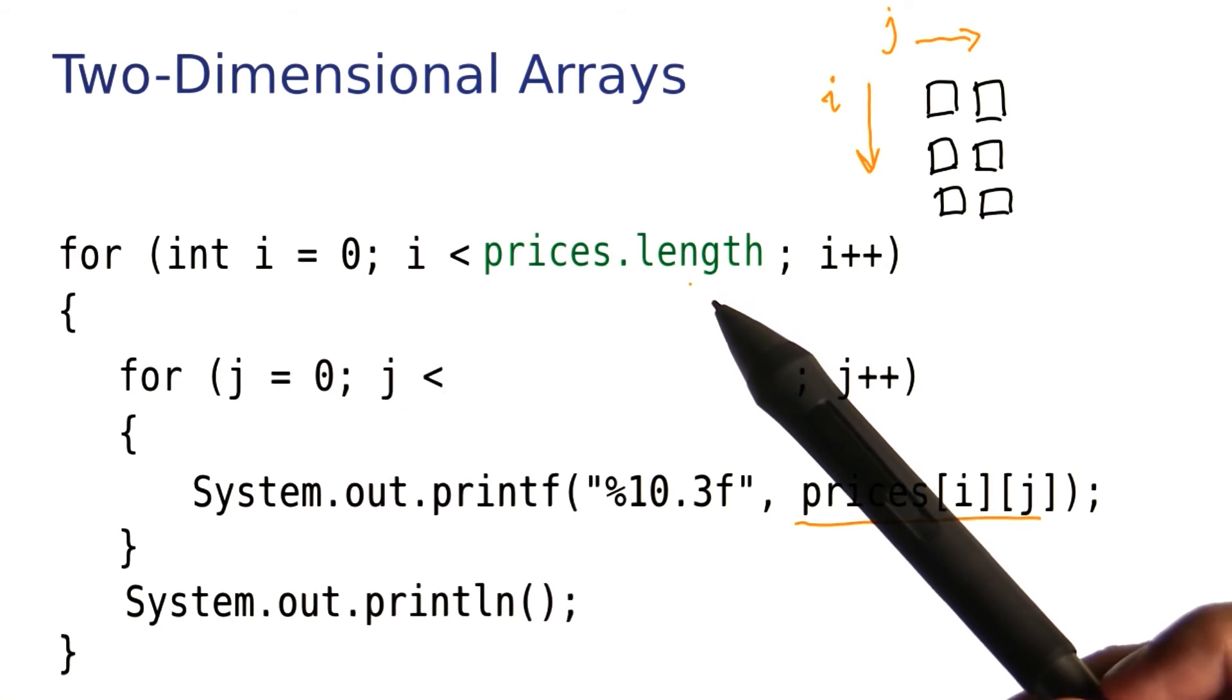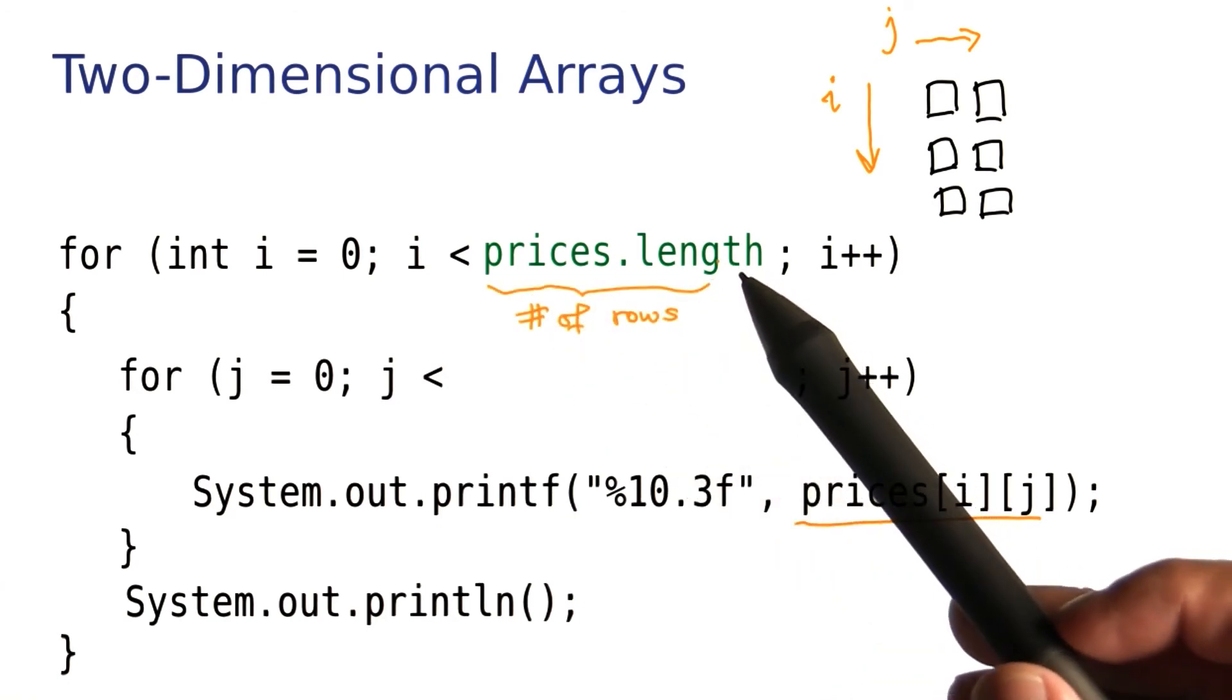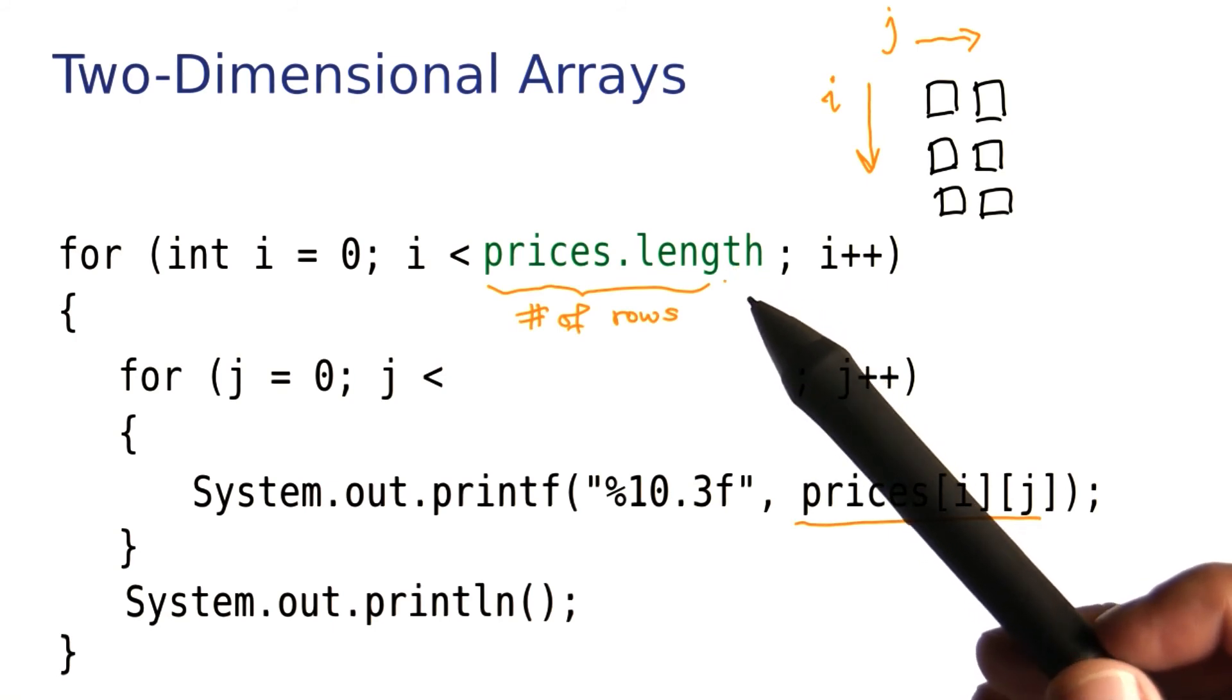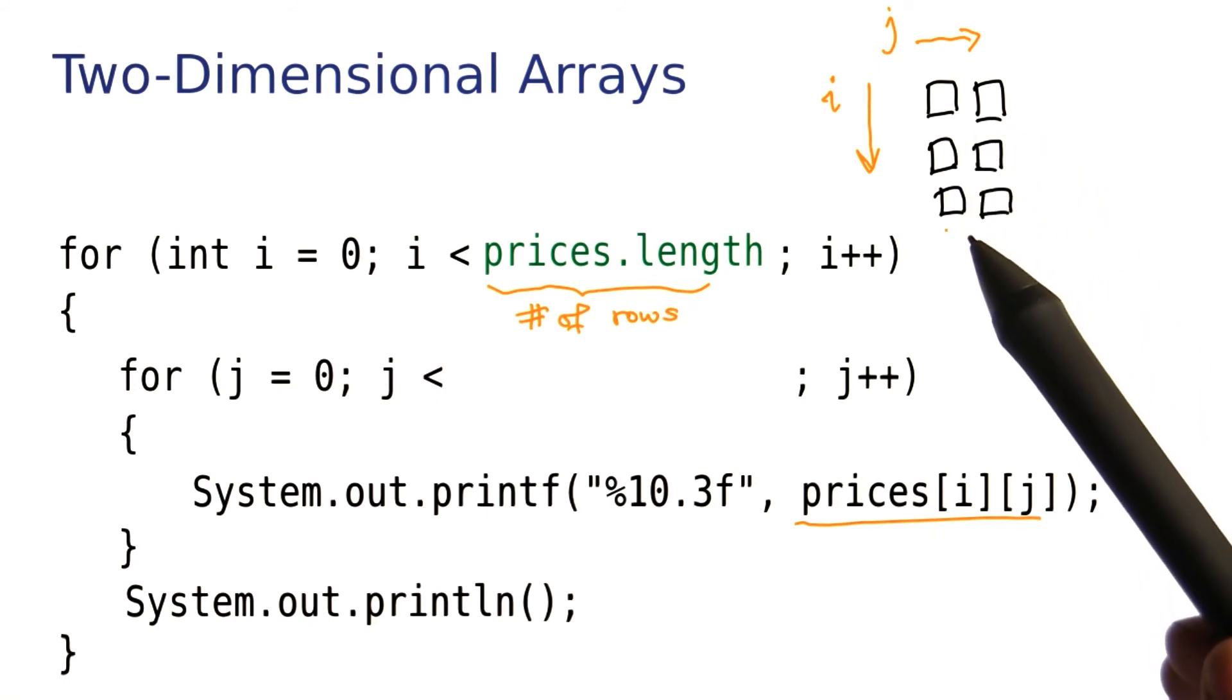You can get the number of rows from a two-dimensional array by asking it array name dot length. And the reason for this is that a two-dimensional array is actually an array of one-dimensional arrays. So prices, which looks like this nice tabular arrangement,